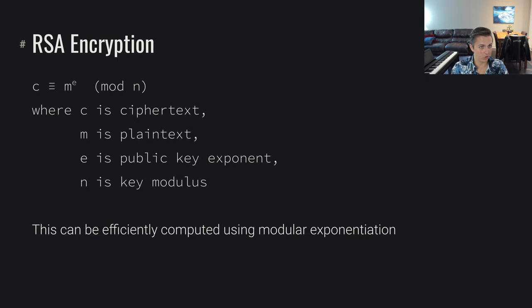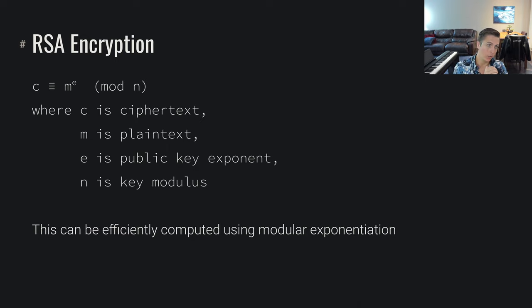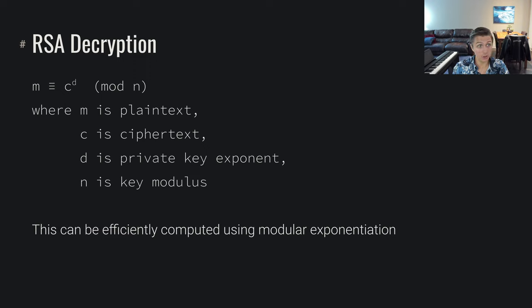To perform encryption, the ciphertext c is congruent with m to the e mod n, where c is ciphertext, m is plaintext, e is the public key exponent, and n is the key modulus. This can be done efficiently using modular exponentiation. To decrypt, m is congruent with c to the d mod n, where d is the private key exponent and n is the key modulus. This too can be efficiently computed using modular exponentiation.